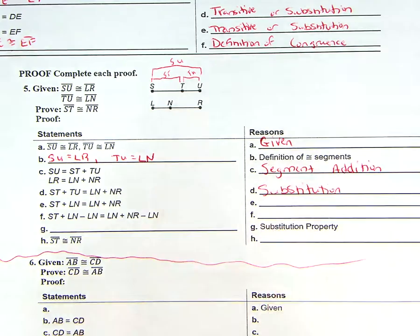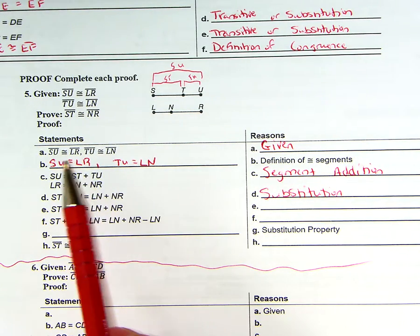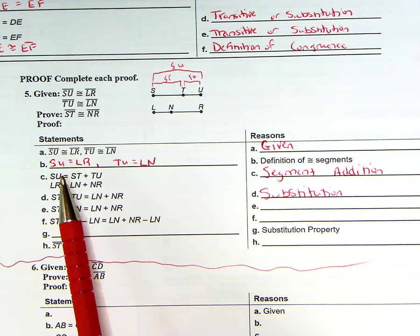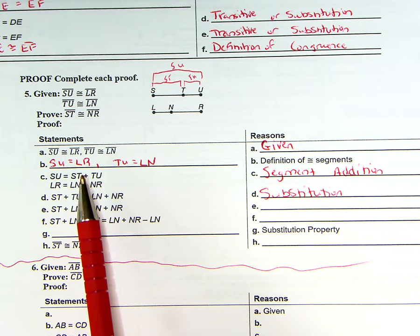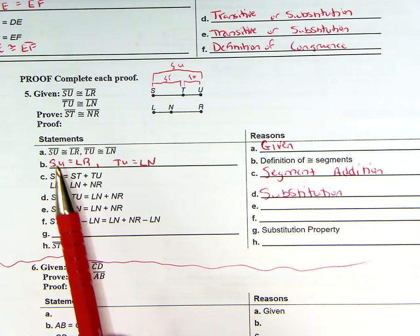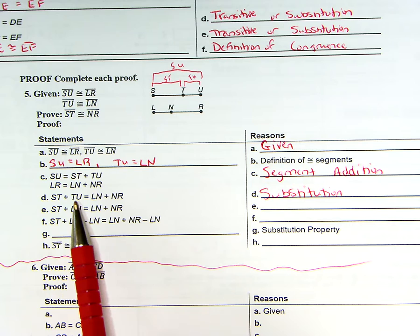And what happened was, here's our equation SU equals LR. Well if we know that SU equals ST plus TU, we can substitute the right side, the ST plus TU in for SU. So that's how we got ST plus TU right here.